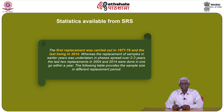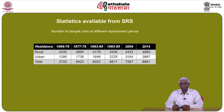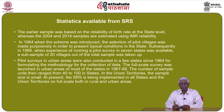The following table provides the sample size in different replacement periods. Number of sample units at different replacement periods with reference to periods like 1969-70, 77-78, 83-85, 93-95, 2004 and 2014, with respect to residential locations like rural, urban and total. The earlier sample was based on the reliability of birth rate at the state level, whereas the 2004 and 2014 samples are estimated using IMR reliability.